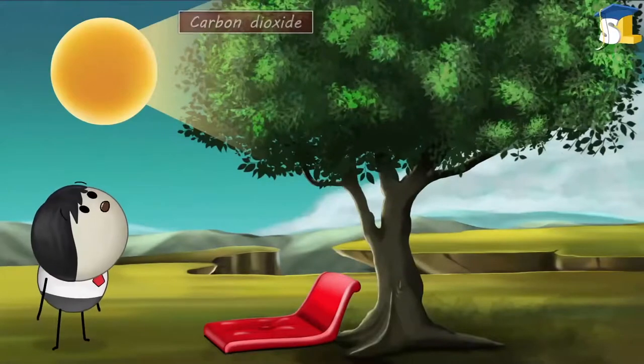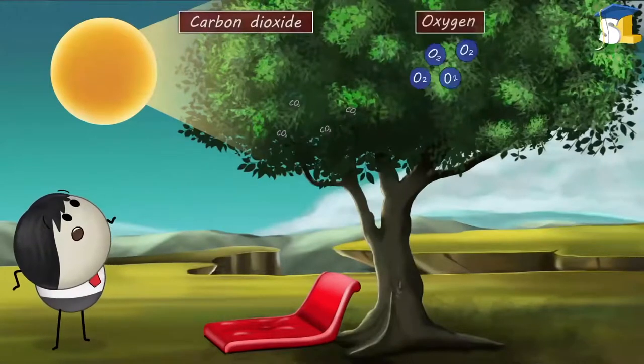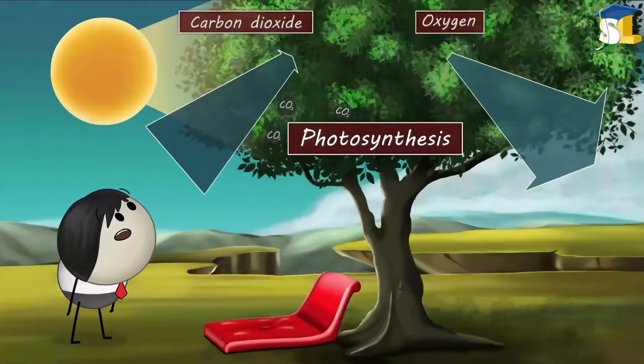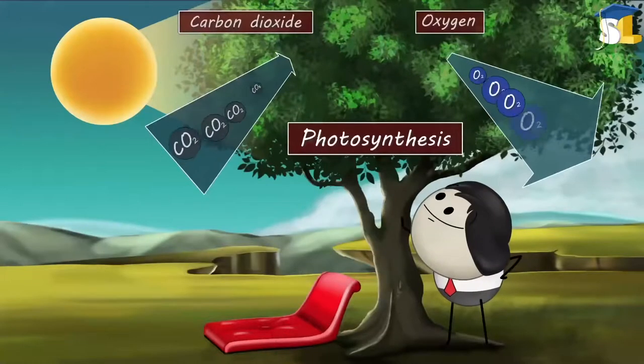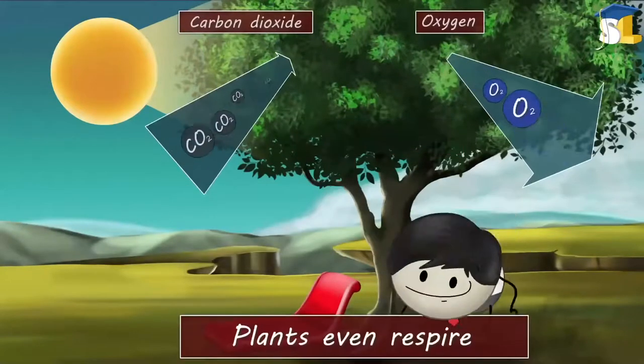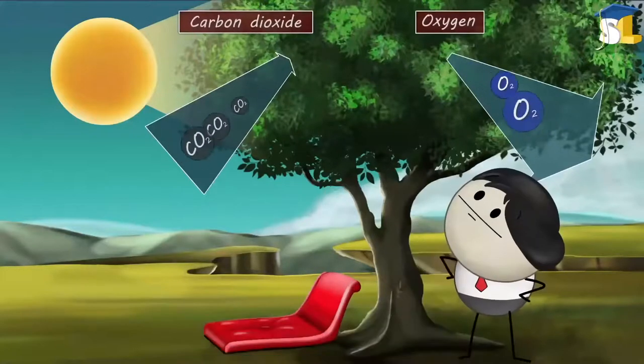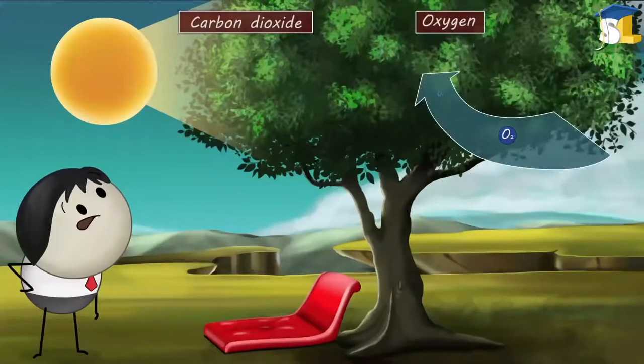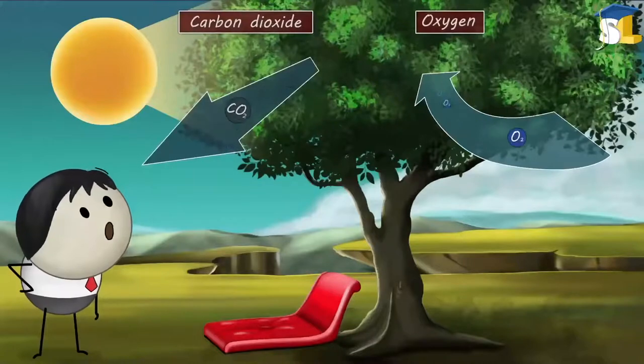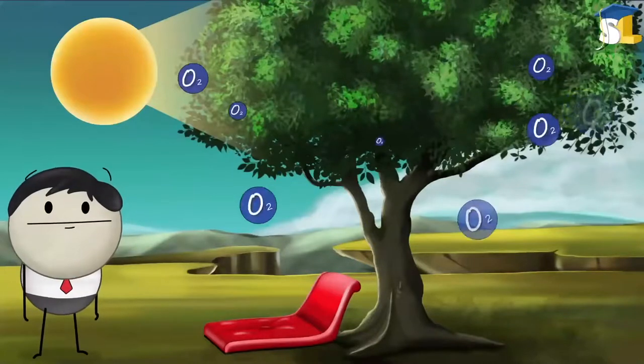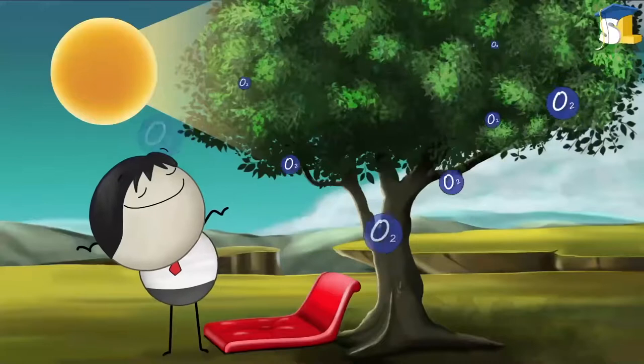This is because during the day, in the presence of sunlight, plants take in carbon dioxide and release oxygen in the process of photosynthesis. However, they even respire simultaneously. In this process, plants take in oxygen and release carbon dioxide. But the production of oxygen is more than the production of carbon dioxide.